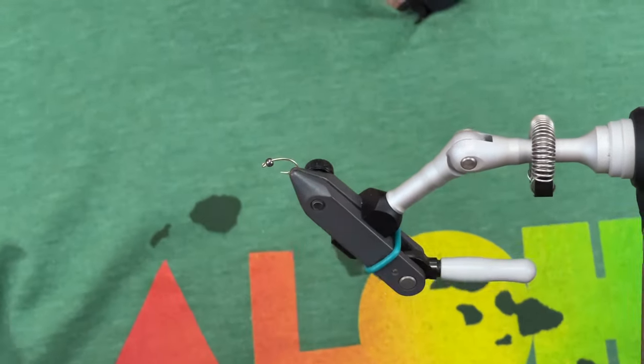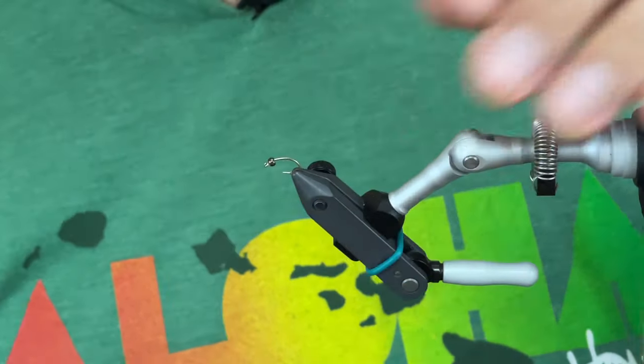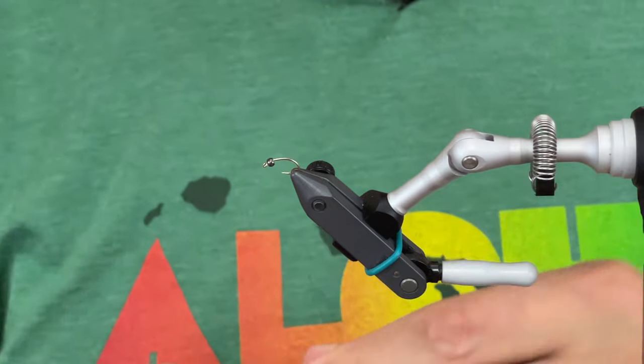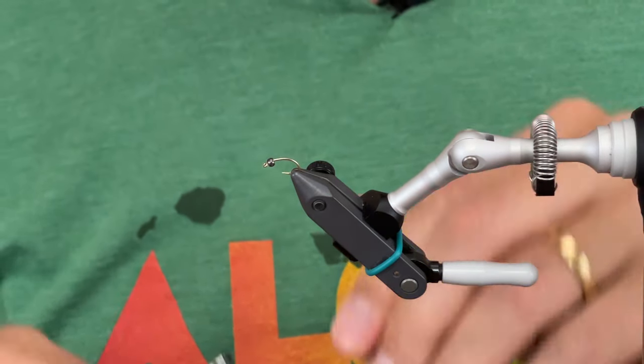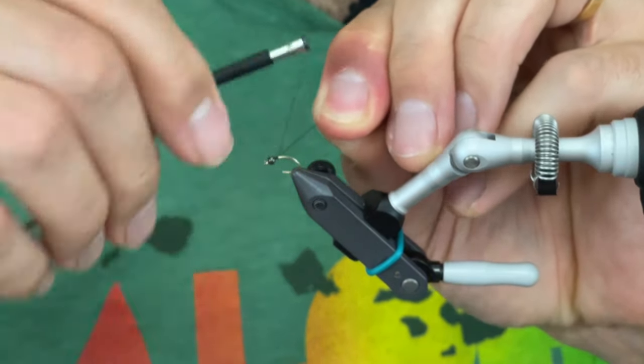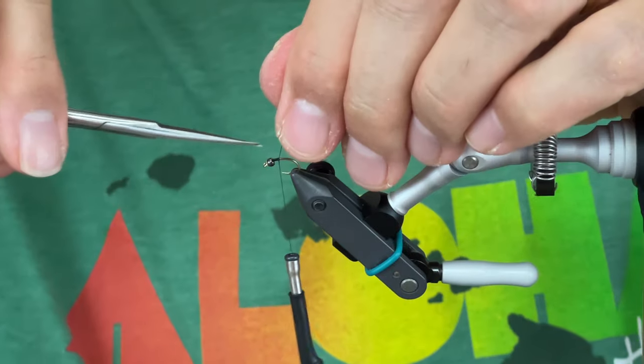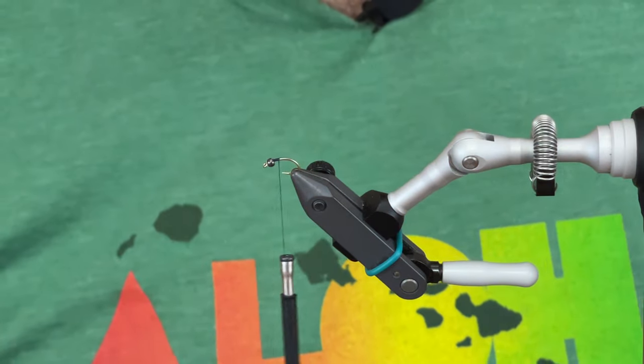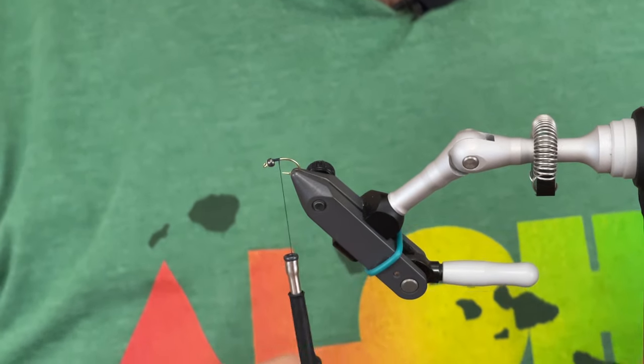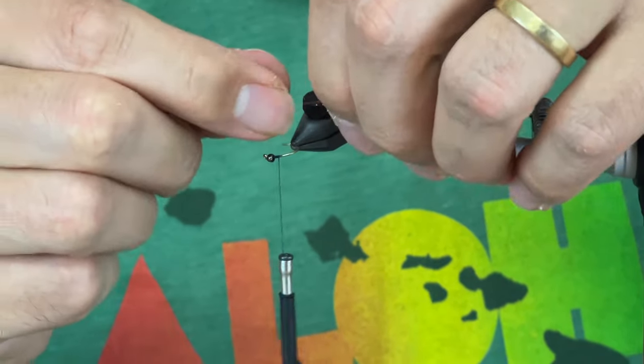We've got our size 14 scud hook, our 2.4 millimeter black nickel tungsten white tip bead, and we're going to tie on our UTC 70 black, which is going to be our underbody. We're going to tie in our red wire at the bottom part of the hook here.